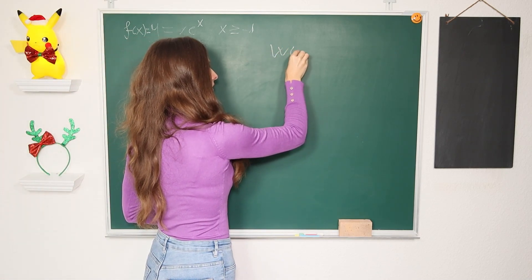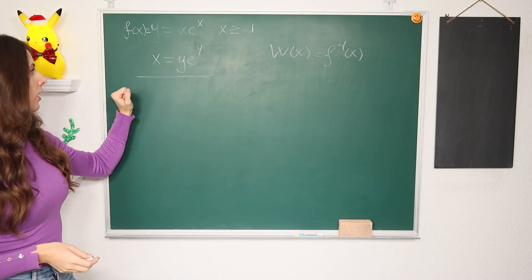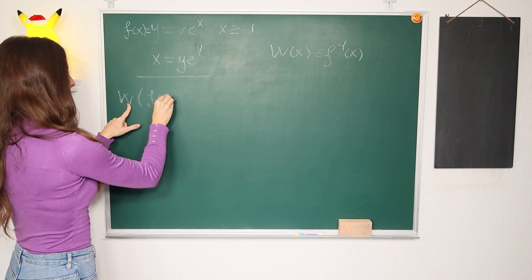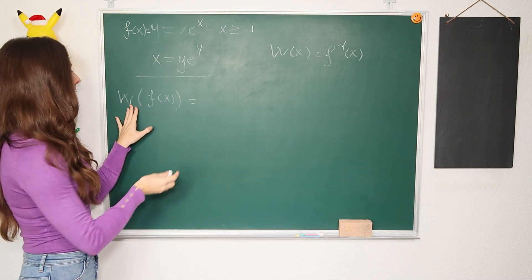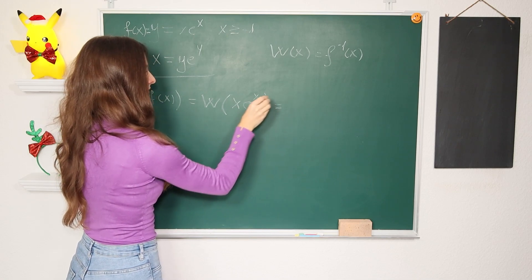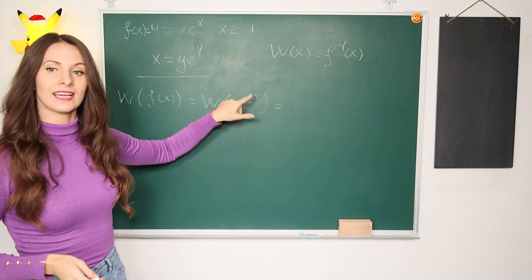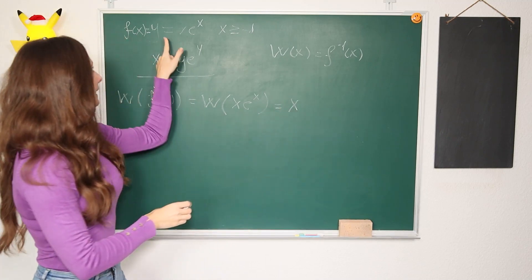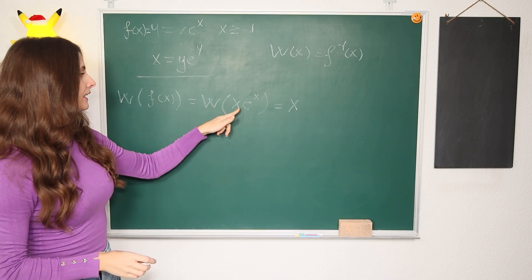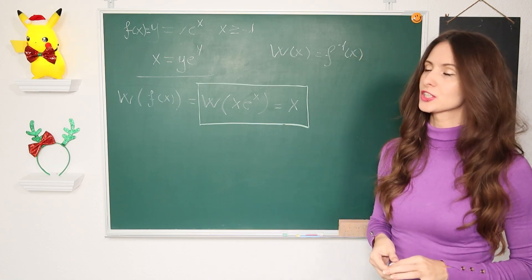The Lambert W function is denoted as W(x) and is the inverse function. If you replace every x with y and every y with x in x·e^x, you get the inverse function y·e^y. So the inverse of x·e^x is y·e^y, and this is the core relationship.